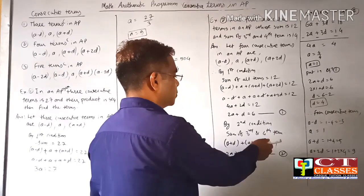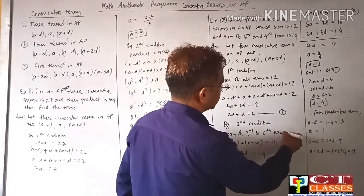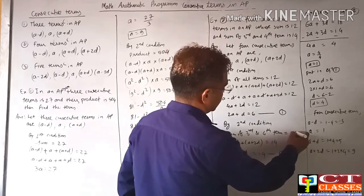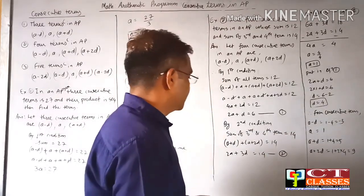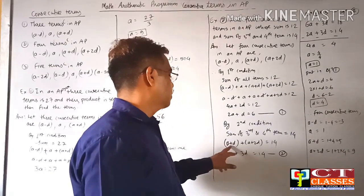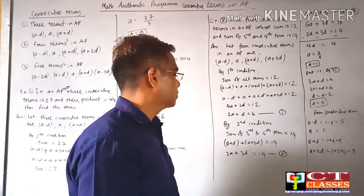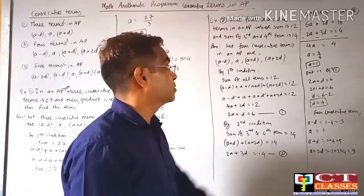Second condition: sum of last two terms is 14. So (a+d) + (a+2d) = 14. Opening brackets: 2a + 3d = 14. This is equation 2.